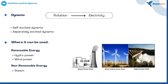In dynamo, there are two types: self-excited dynamo and separately excited dynamo. Self-excited dynamos are simpler and more commonly used in smaller or off-grid systems, while separately excited dynamos are used where precise control of voltage is required. Dynamos are mostly used in wind turbine power plants, hydropower plants and steam power plants, because dynamos use rotation to create electricity.